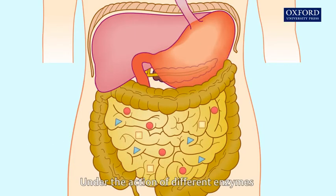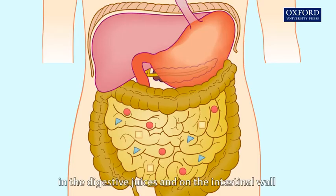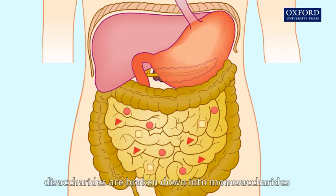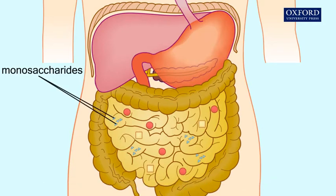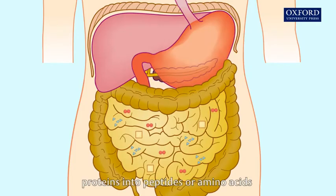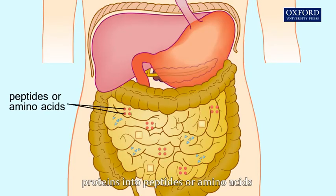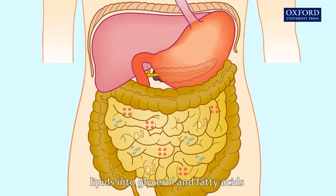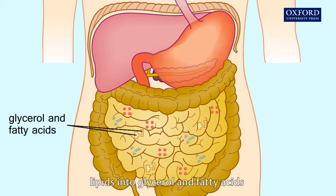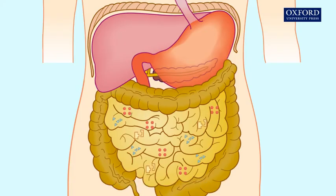Under the action of different enzymes in the digestive juices and on the intestinal wall, disaccharides are broken down into monosaccharides, proteins into peptides or amino acids, and lipids into glycerol and fatty acids.